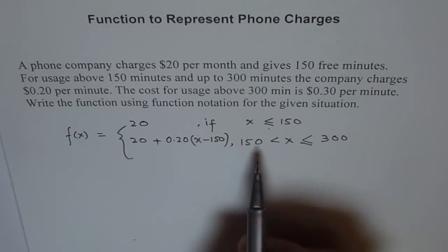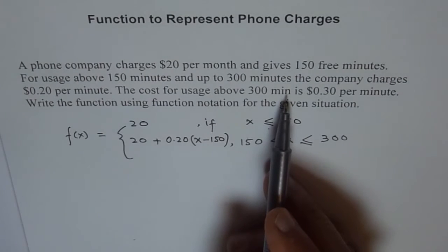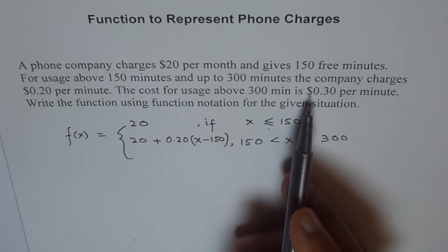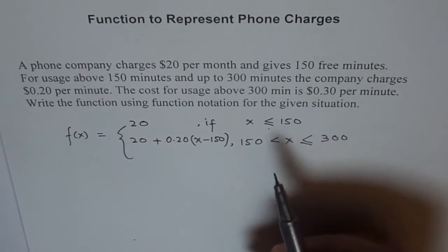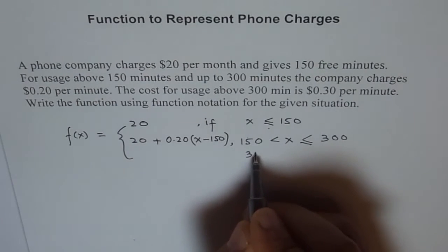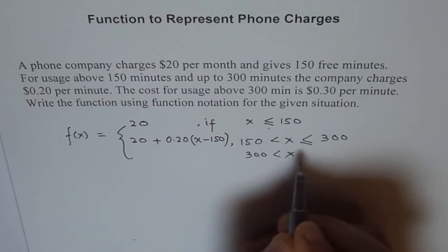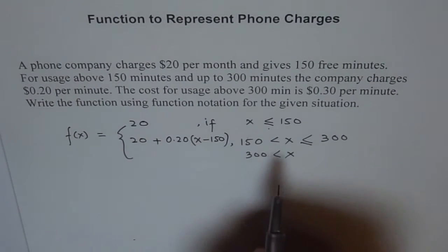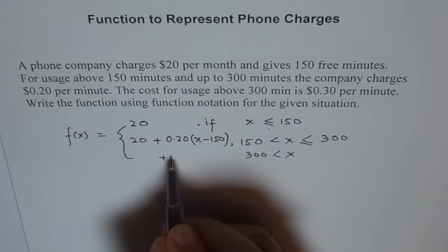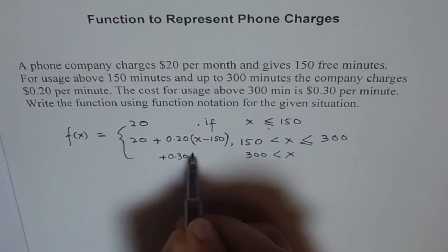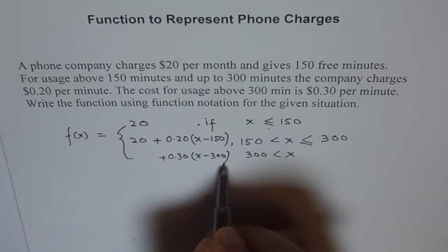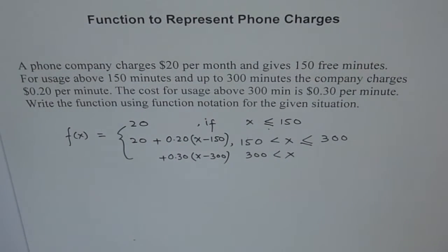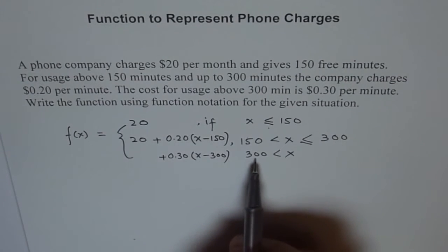Now if it is more than 300 minutes, then the company charges 30 cents per minute. So if it is more than 300, x is more than 300. There is no upper bound here but anything more. So it charges 30 cents for everything more than 300. So it will be x minus 300.